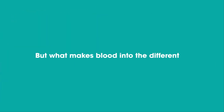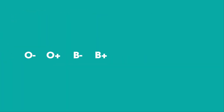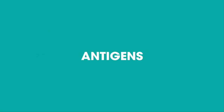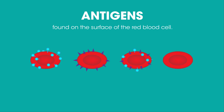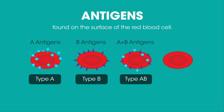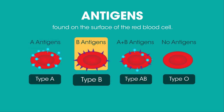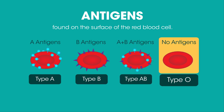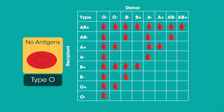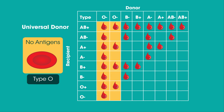But what makes blood into the different types? The type O, B, A, or AB depends on little molecules called antigens that are found on the surface of the red blood cell. The antigens can be one of four options: A antigens, B antigens, both A and B antigens, or there may be no antigens. The type of antigens you have determines which blood type you are. See how type O doesn't have any antigens? That's why it's the special blood type that can be donated to everyone else — it's known as the universal donor.